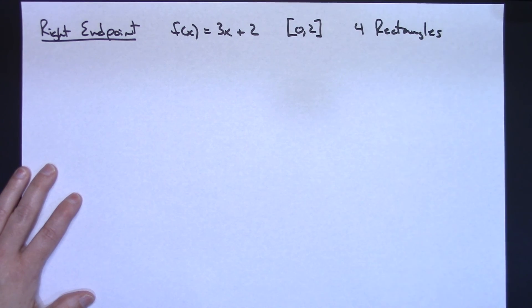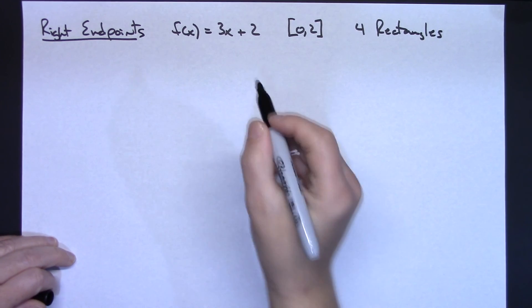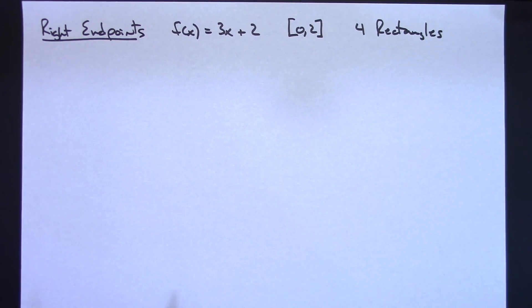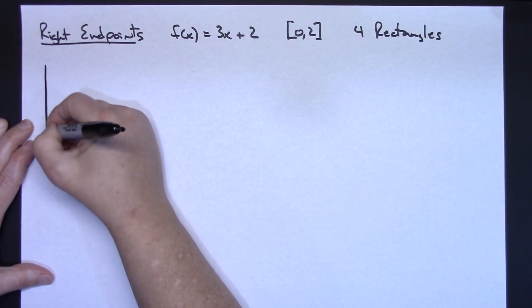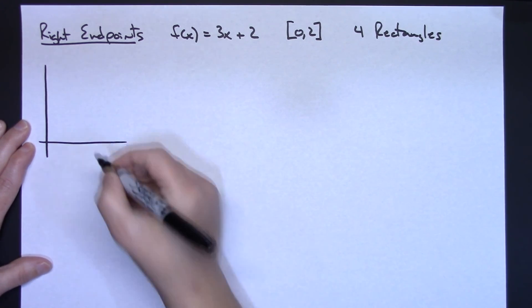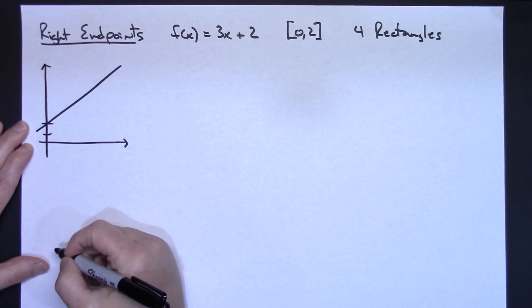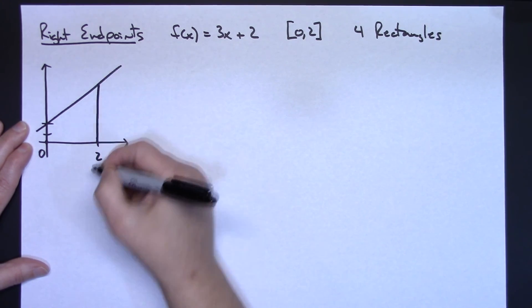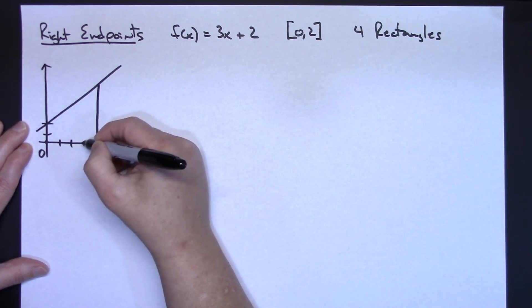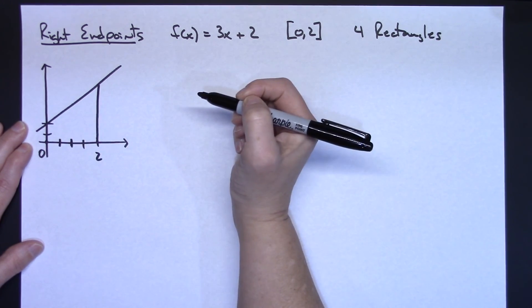Now let's work this exact same example using right endpoints — same function, same interval, four rectangles. Let's sketch it out again. It's the same linear equation through y = 2, from 0 to 2, with four equal rectangles.